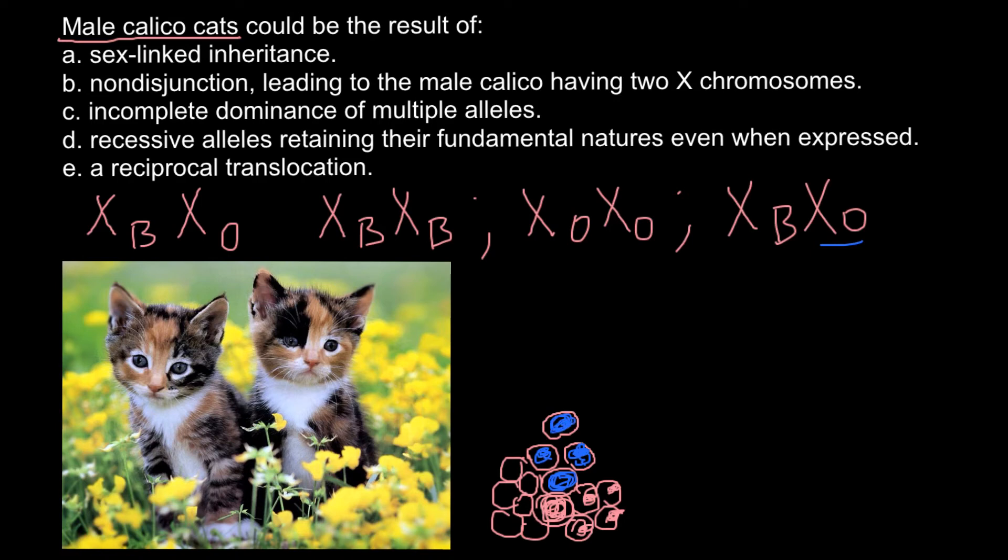So this explains why female cats have patches of different colors. And this is due to this random process of turning away the maternal or paternal X chromosome. Because one of these chromosomes female cat would get from father and another one from the mother side.